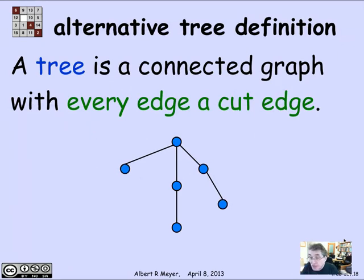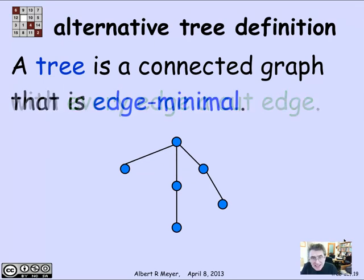So another way to define a tree is to say a tree is a connected graph where every edge is a cut edge. That is, as soon as you cut any edge out of a tree, it stops being connected. That yields another way to say that something is a tree. A tree is a simple graph that is connected and is edge minimal, which again means that if you remove any edge, it stops having that property of being connected. So it's an edge minimal connected graph.